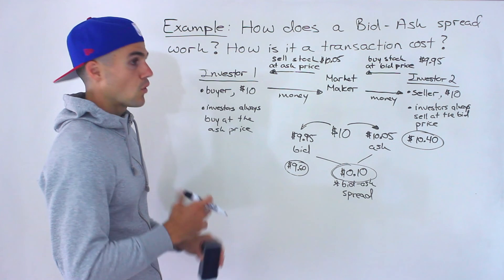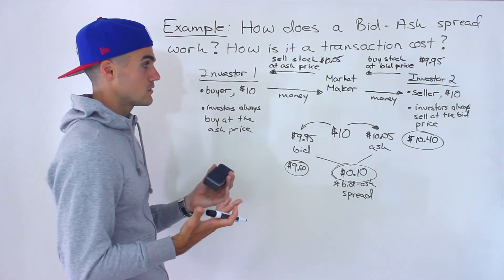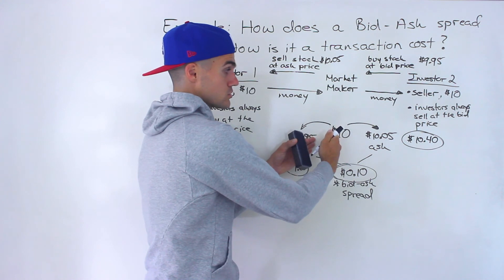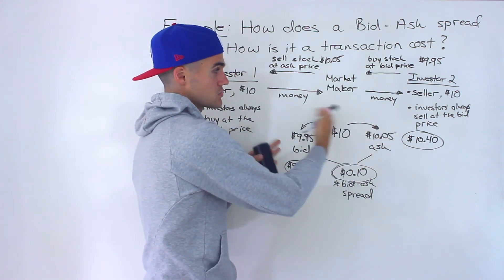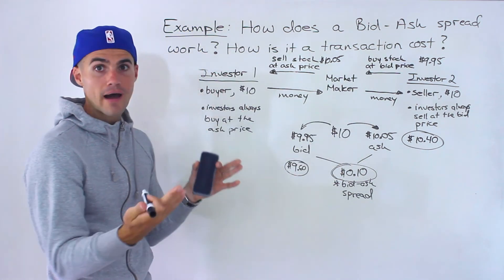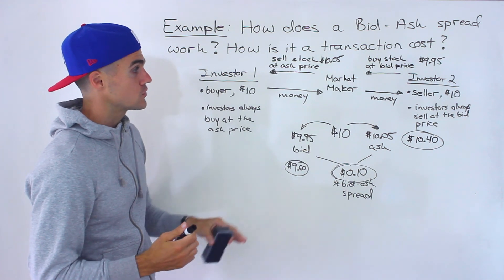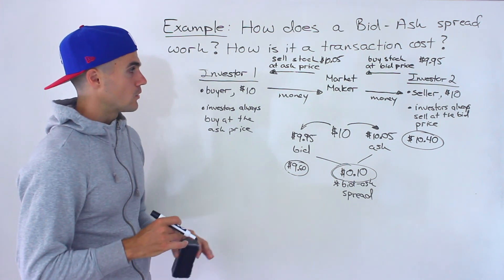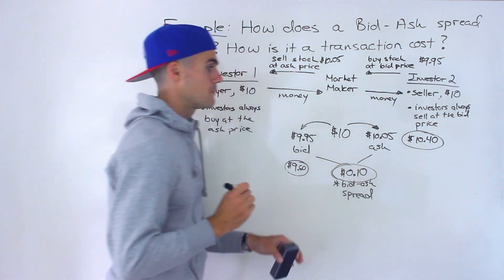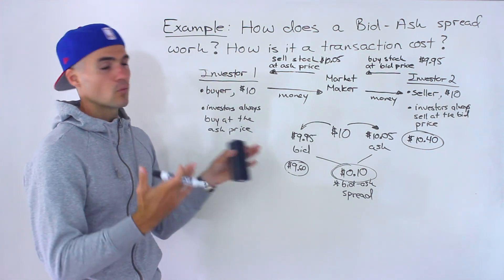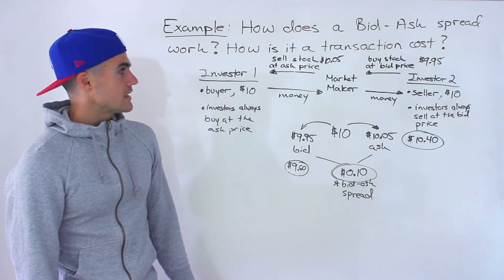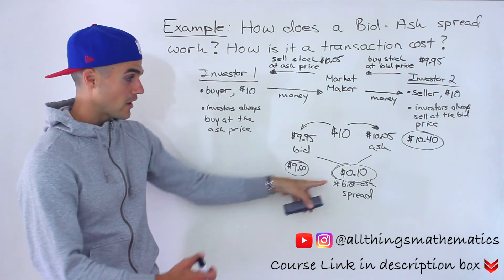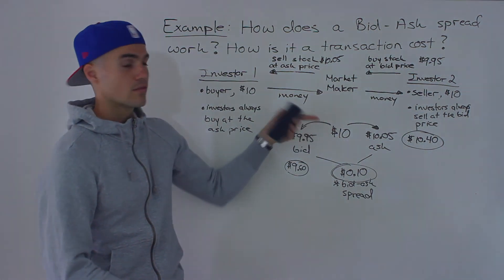Another factor is overall market volatility. If something crazy happens in the world and there's a lot of uncertainty, the market maker will widen the bid-ask spread because there's more risk — they don't know what price fluctuations might happen in the next five to ten minutes. Versus in a normal economy where things are going okay, they'll tighten the spread because they feel there won't be as many price fluctuations. So to summarize: investors always sell at the bid price and always buy at the ask price, and the spread goes to the market maker as the transaction cost.